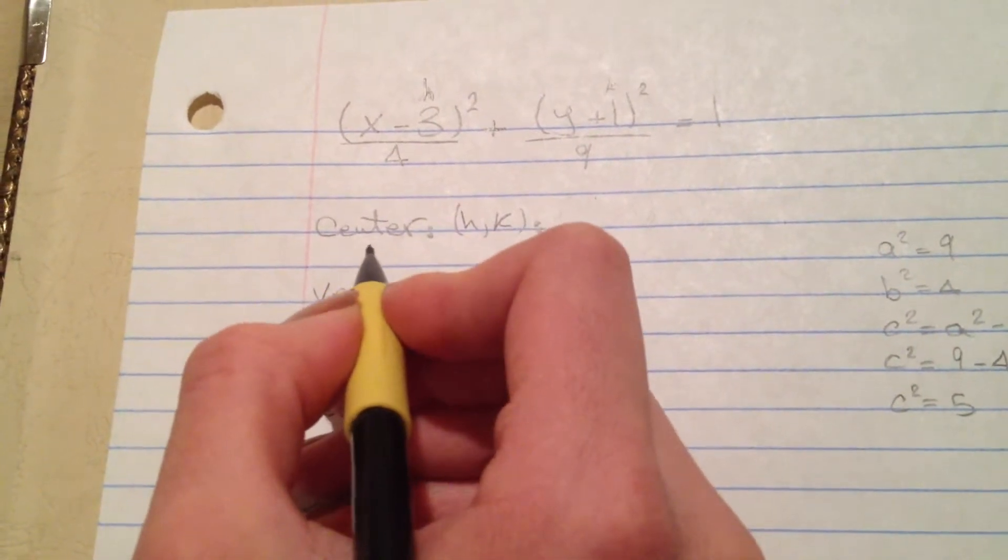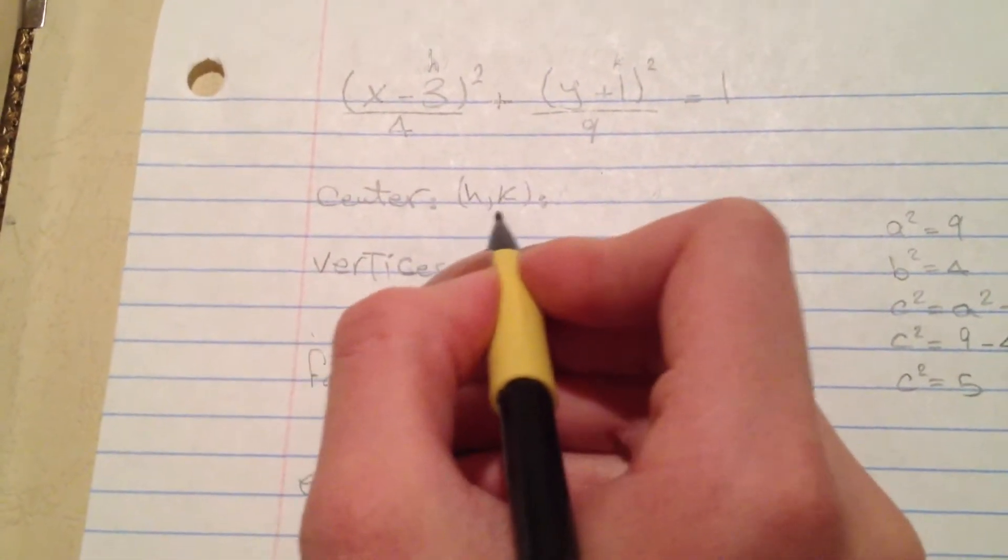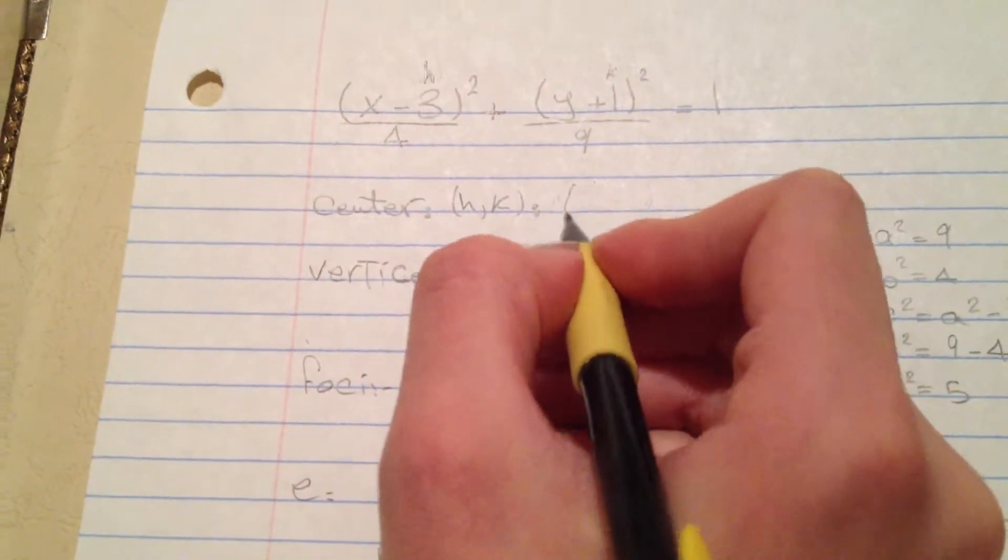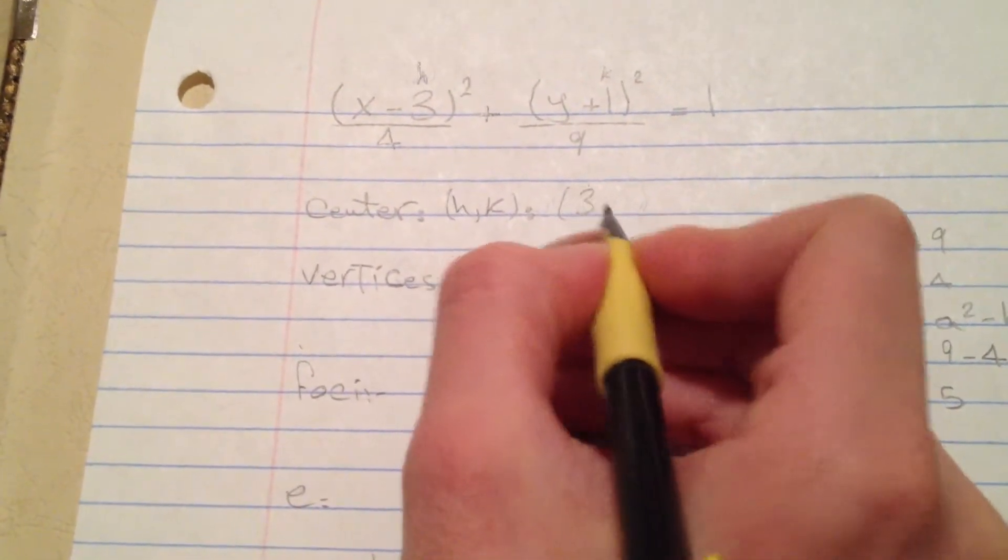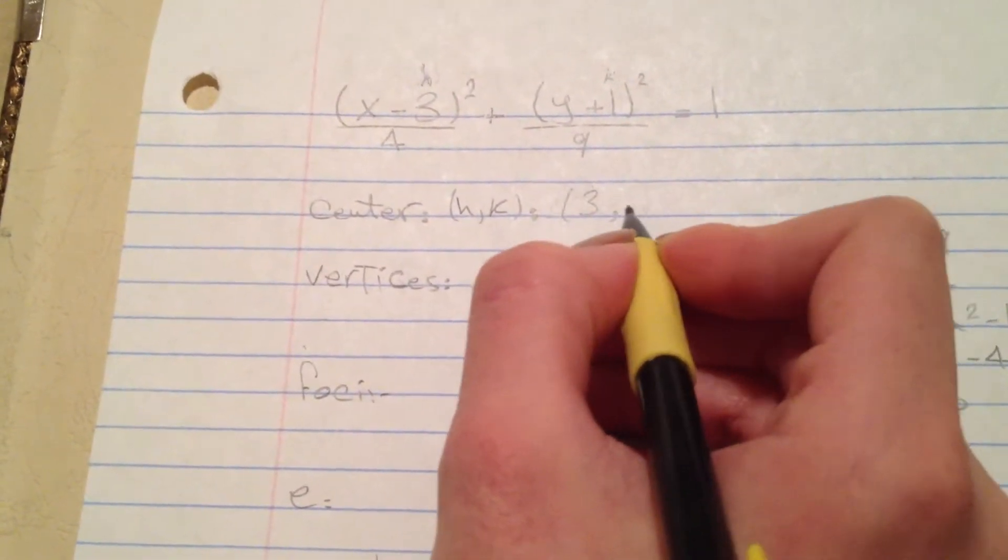First we have to find the center which is h and k. We have the h where it is 3 and the k is negative 1.